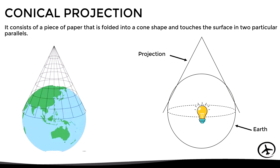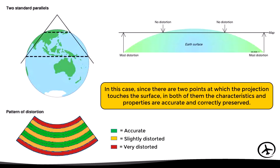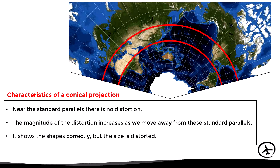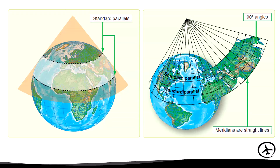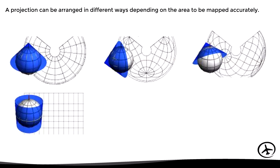The conical projection consists of a piece of paper folded into a cone shape that touches the surface at two particular parallels known as standard parallels, as seen in these images. Since there are two contact points, characteristics and properties are accurately preserved at both, producing a characteristic distortion pattern. The main properties are: near the standard parallels there is no distortion; distortion increases as we move away from them; and it shows shapes correctly but sizes are distorted, just like the cylindrical projection.